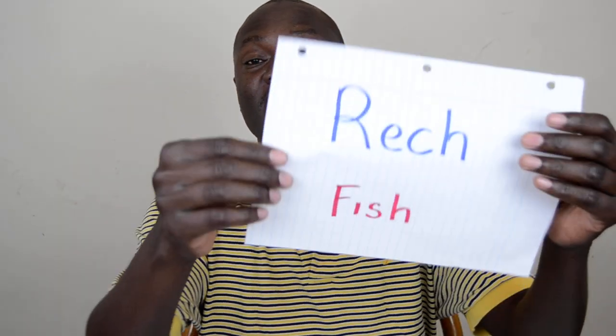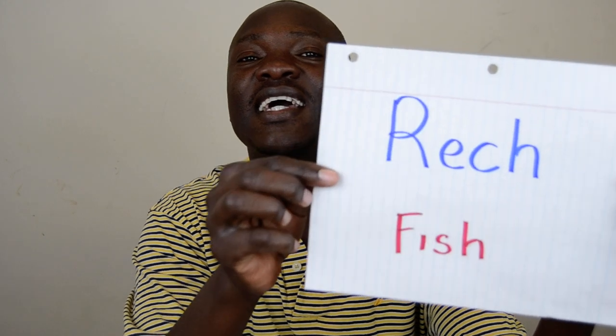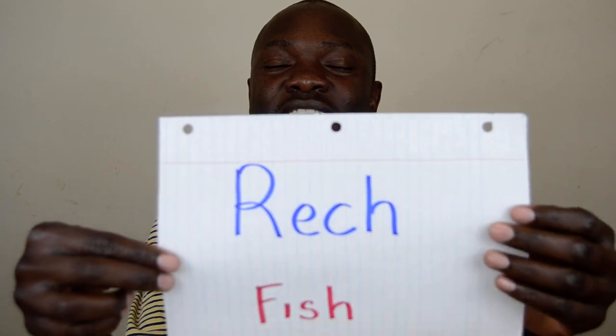Today I want to talk about the types of fish — fish vocabulary. There are some fish that I do not know, so stay until the end of the video so you can let me know if you know about them. Fish is called 'rich' in Luo. Let's say it together: rich. That's fish. And many fish is 'ray'.